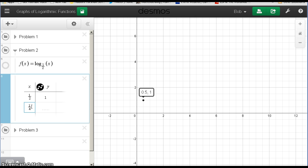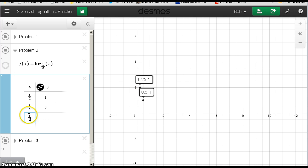What if I put in 1 fourth? That would give me 2 as an output. I can see that one is right here. What if I have 1 eighth? 3 would be my output. Starting to get an idea of what's going on here.